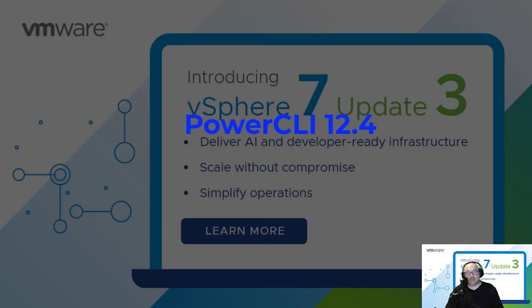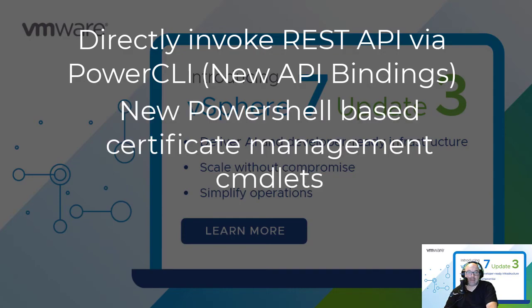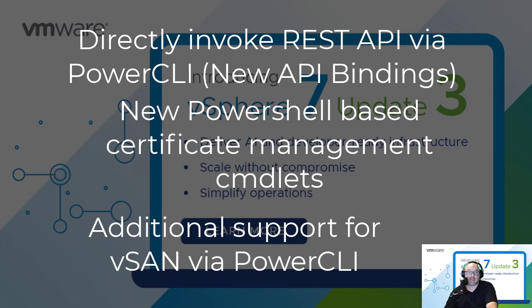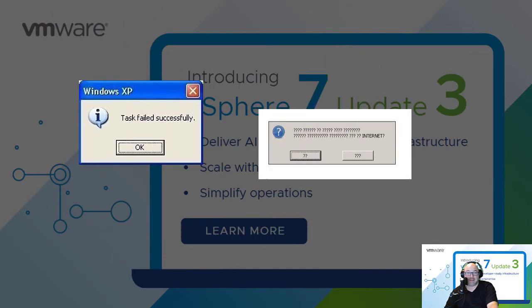PowerCLI 12.4 is coming soon. This version will include the ability to directly invoke REST APIs via PowerCLI, new PowerShell-based certificate management cmdlets, and additional support for vSAN via PowerCLI.